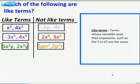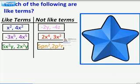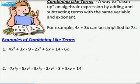So looking at the characteristics, we can see that like terms are terms whose variables and their exponents, such as the 5 in x to the 5th, are the same. Does that make sense? Great!